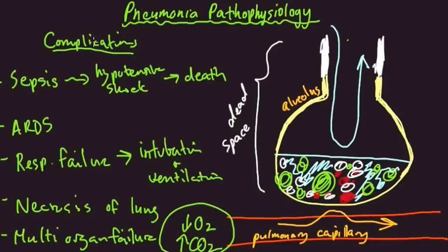Normal cellular metabolism cannot continue without oxygen and with a buildup of too much CO2. As you can see, these are some very serious complications related to pneumonia, which is why it is one of the most common causes of death from infection in the United States.